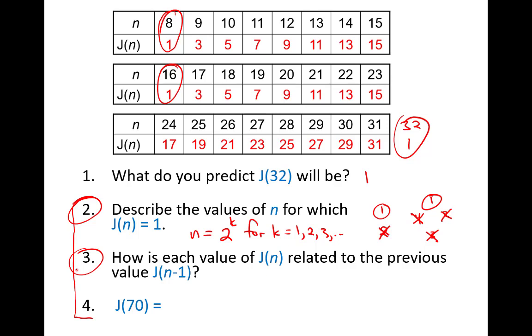All right, question number three. How is each value of J(n) related to the previous value of J(n-1)? So we might actually make a little function here, and I guess maybe a piecewise function is the best way to describe this. From the previous work, we said J of n equals one if n equals two to the k, where k is some natural number, one, two, three, and so on. But if it's not one, if the function value is not one, I can figure out the function value by looking at the previous one and just adding two. Like nine is two more than seven. Fifteen is two more than thirteen. So I can take my previous value, J of n minus one, and add two to that.